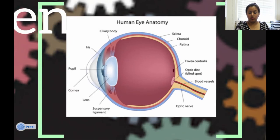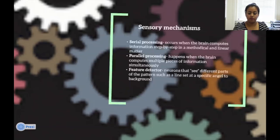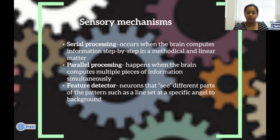Here is a graph about the eye. We talked a lot about the pupil, the cornea, the lens, the optic nerve, and the retina — this graph shows where these things are located in the eye. Serial processing occurs when the brain computes information step-by-step in a methodical and linear manner. Parallel processing happens when the brain computes multiple pieces of information simultaneously. Feature detectors are neurons that respond to different parts of a pattern, such as a line set at a specific angle to the background.